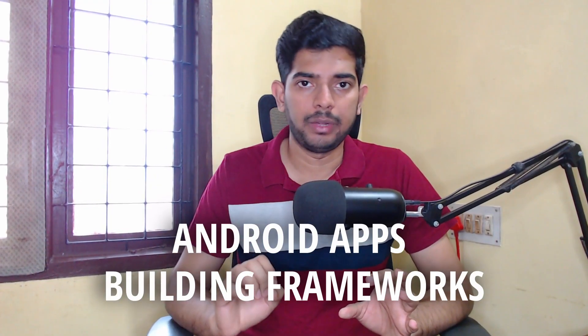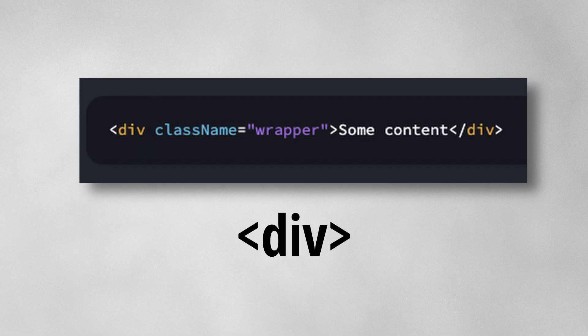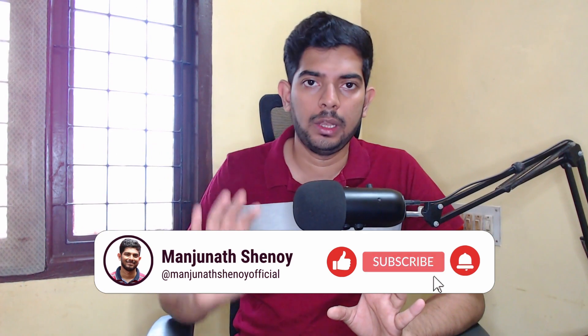React Native is an application-building framework that uses React to code everything and converts it into a native Android or iOS application. If you already know React, it will be easier to get started because you'll still be using React concepts like useEffect, useData, context, and Redux. The only change is that instead of using div and other HTML elements, you'll be using View, Text, and other mobile components.